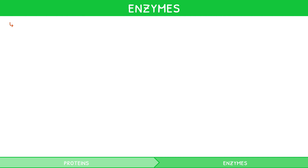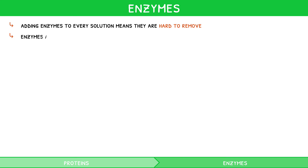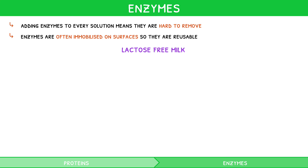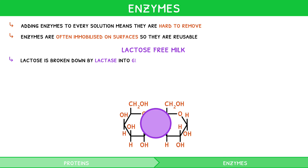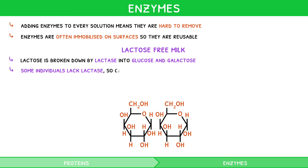Adding enzymes to every solution means they're hard to remove. So enzymes are often immobilized on surfaces so that they are reusable. This is incredibly useful industrially, for example, to produce lactose-free milk. The IB expects you to describe this process in detail. Lactose is a disaccharide broken down by lactase into glucose and galactose. Some individuals lack lactase, so cannot break down the lactose. Instead, bacteria metabolize the lactose, causing flatulence, nausea, and vomiting.